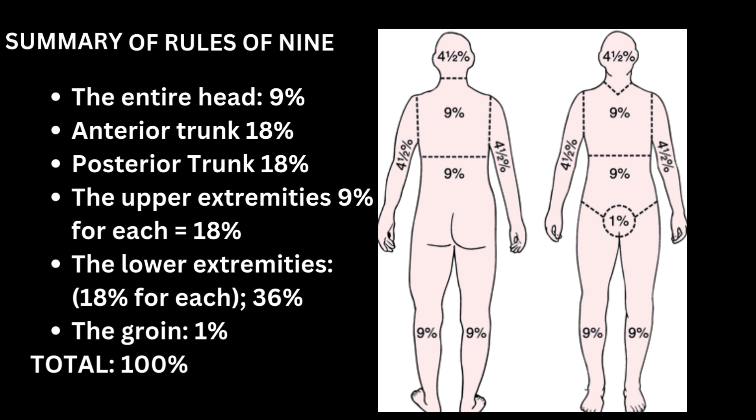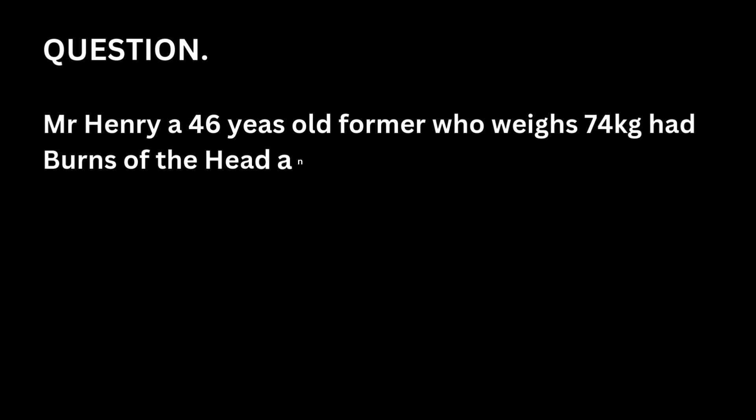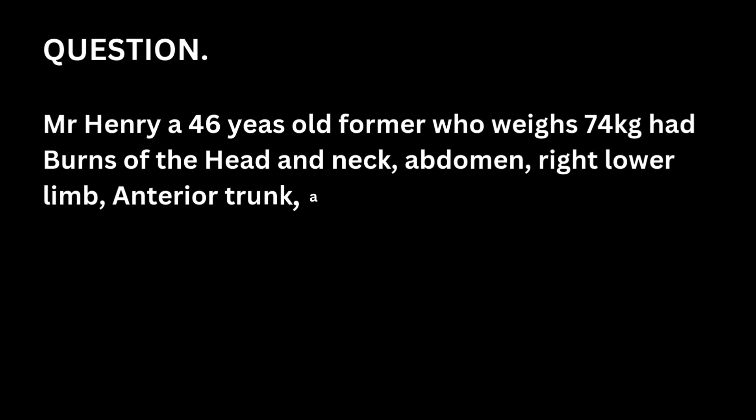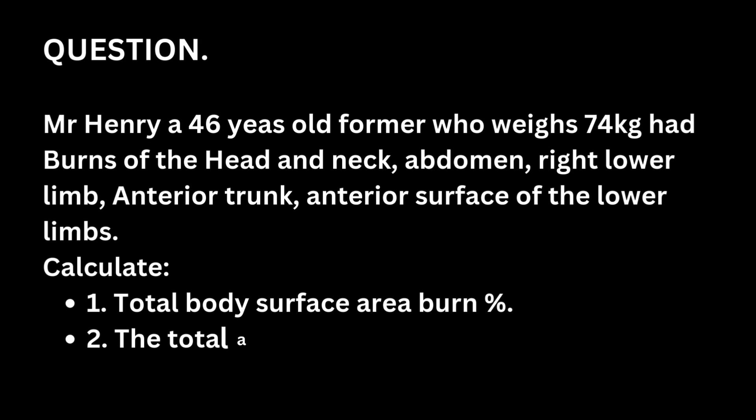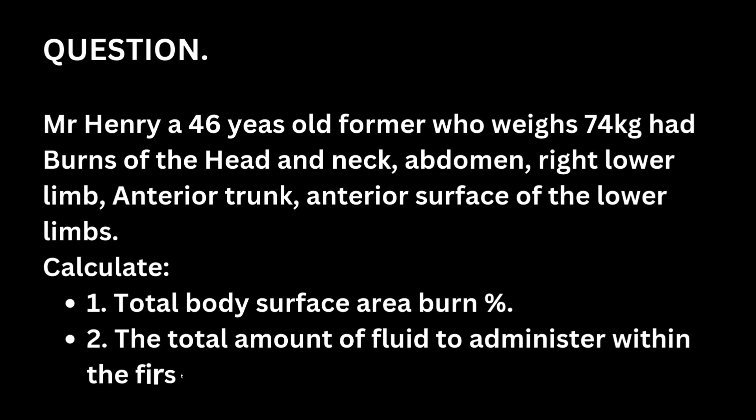Going back to the question — the patient is 46 years old, weighs 74 kg, and had burns of the head and neck. Rule of nine says head and neck is 9%, so we have 9% there. Now, the question lists both abdomen and anterior trunk. The abdomen is found within the anterior trunk, so the anterior trunk at 18% already covers the abdomen. The abdomen is not added separately. Next, the right lower limb alone is 18%.